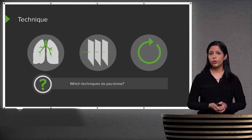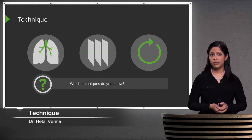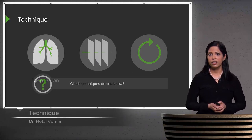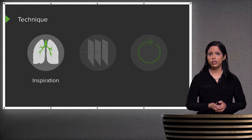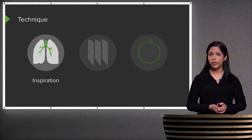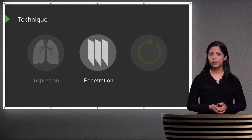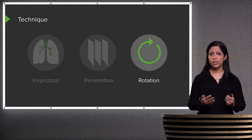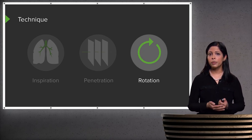There are three different major techniques that are used with chest x-rays. Let's take a look at each one. We have inspiration, penetration, and rotation. Each of these can change the appearance of the chest.